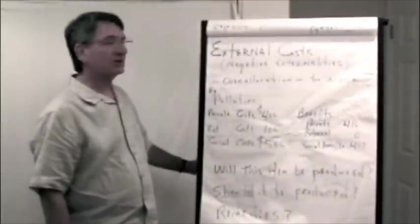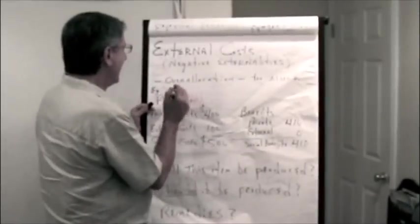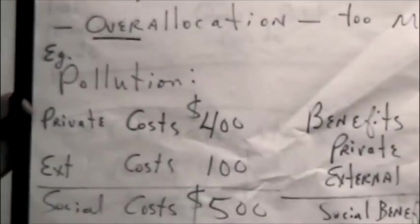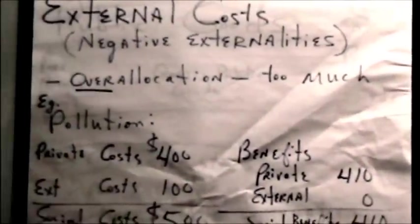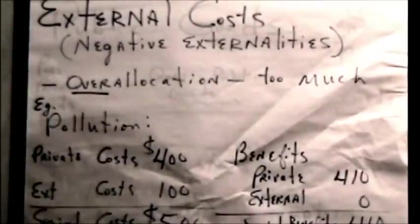Alright, what about external costs? Well, these are called negative externalities. And there will be an over-allocation problem. That is, there will be too much of it done for the well-being of the society when external costs exist in the production or consumption of a good.